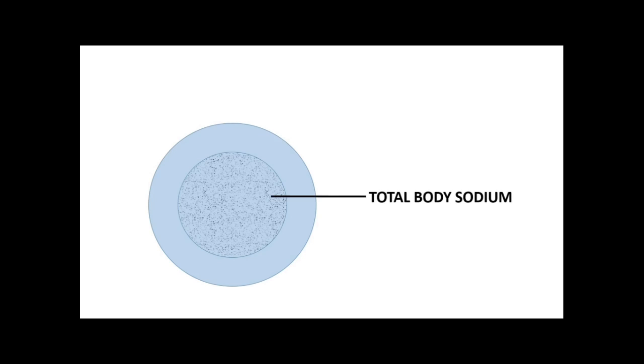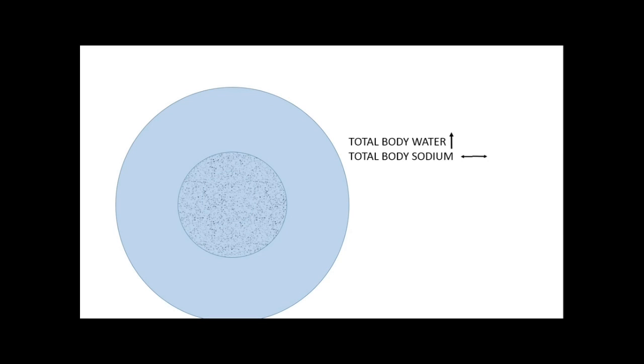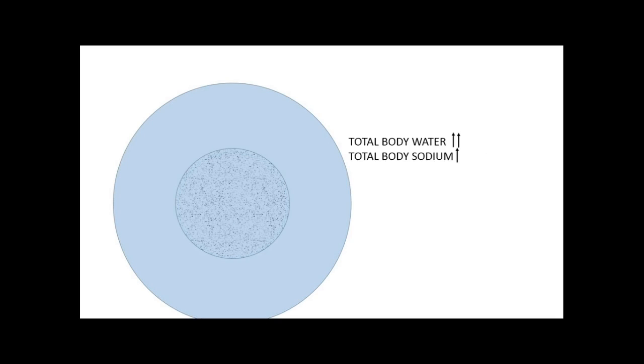Let's talk about causes of hyponatremia. We can categorize hyponatremia into three forms. In the schematic diagram, the plain blue area represents total body water and the granular blue area represents total body sodium. In the first form, total body water decreases but total body sodium decreases out of proportion — this is hypovolemic hyponatremia. In the second form, total body water increases but total body sodium remains normal — this is euvolemic hyponatremia, a dilutional form. In the third form, total body water increases out of proportion to total body sodium — hypervolemic hyponatremia, another dilutional form. The last two are much more common in clinical practice.